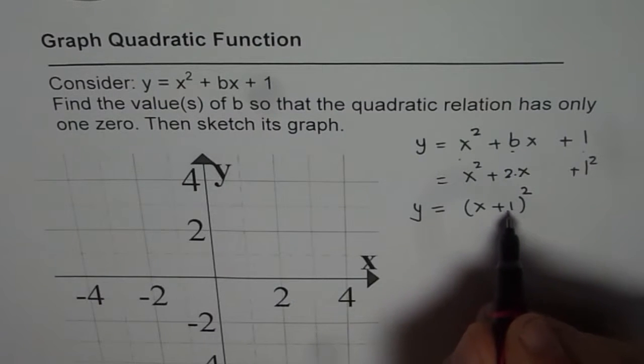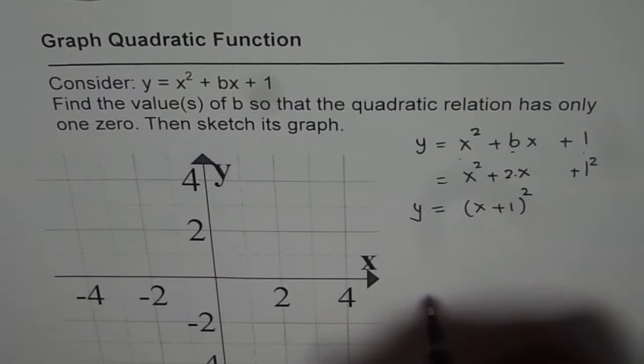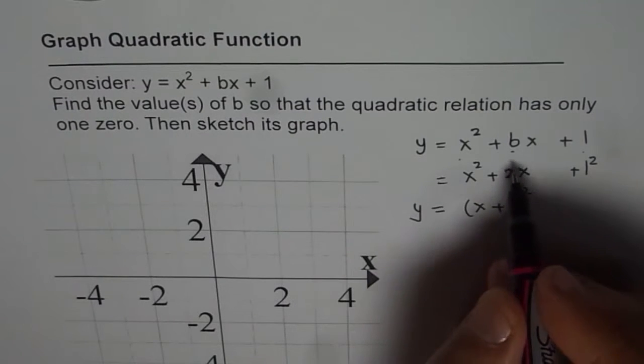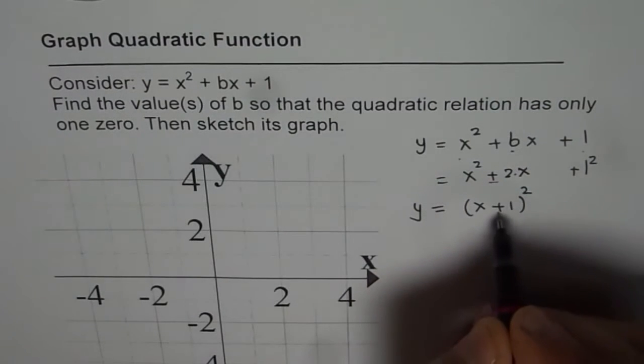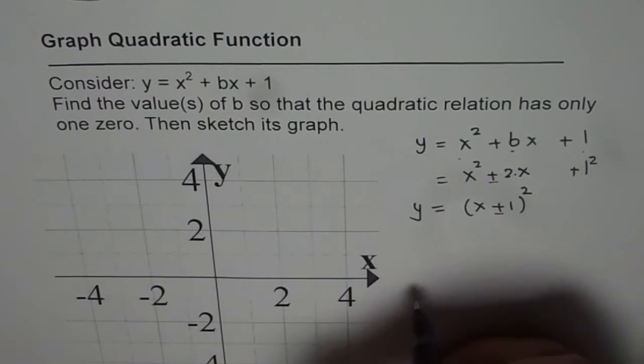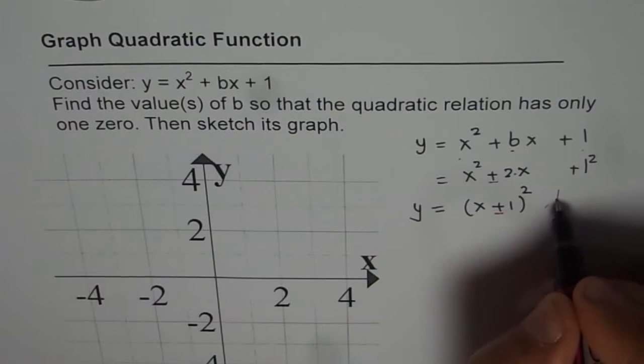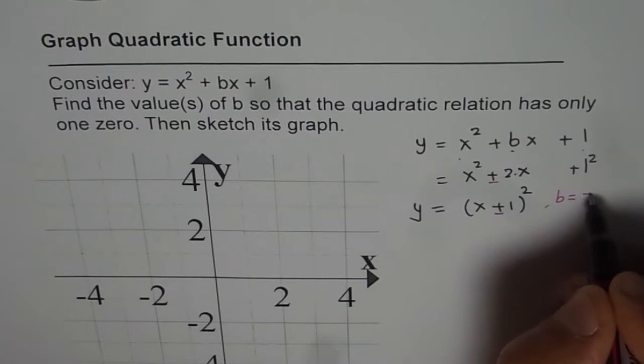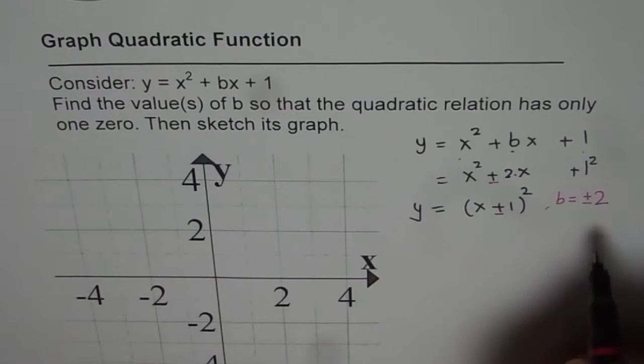Well there was another alternative. We could think this to be minus also. So minus will also work. So b could be equal to plus 2 or minus 2.